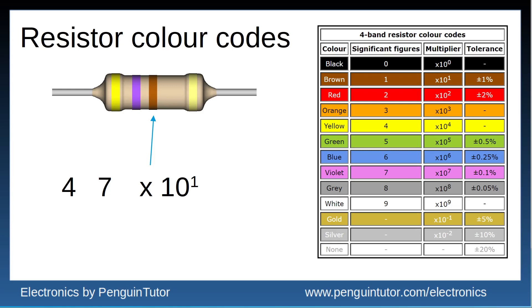The final band is the tolerance, in this case gold which indicates it can be plus or minus five percent. So the actual value will be in the range 446 and a half ohms to 493 and a half ohms.